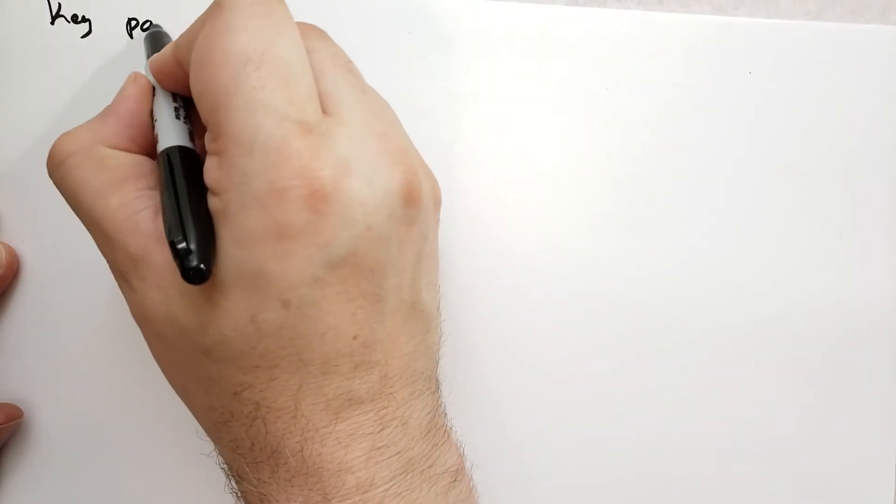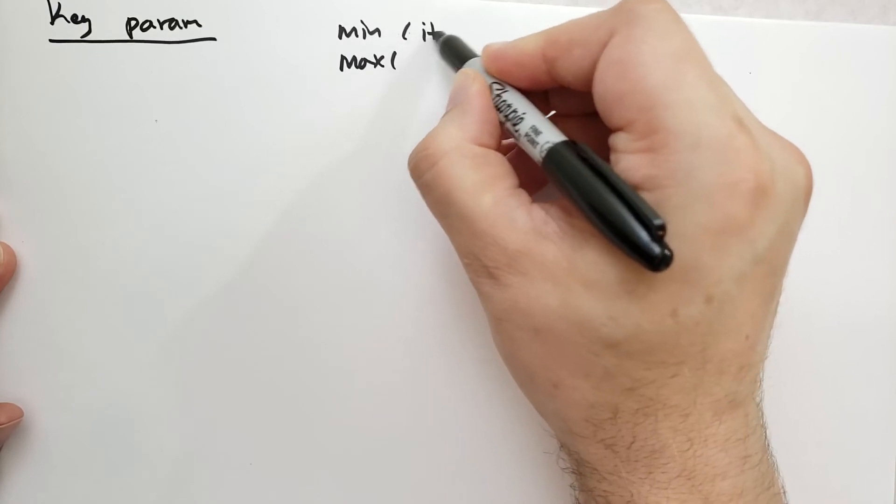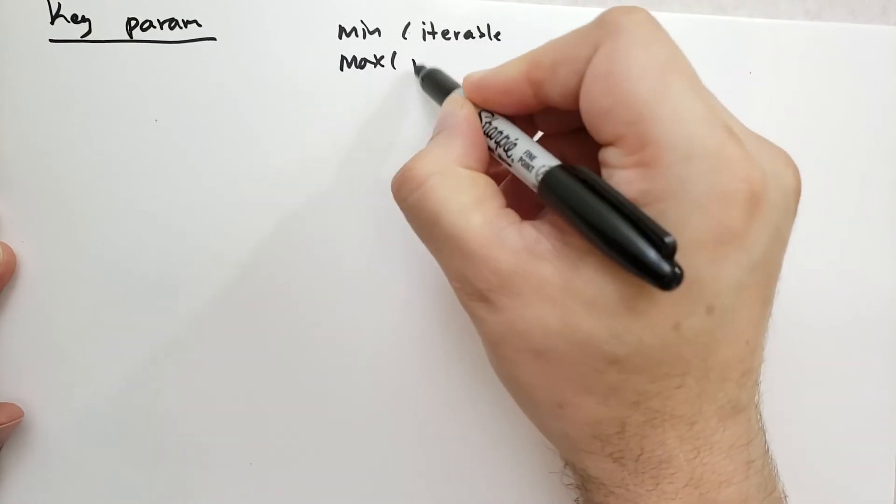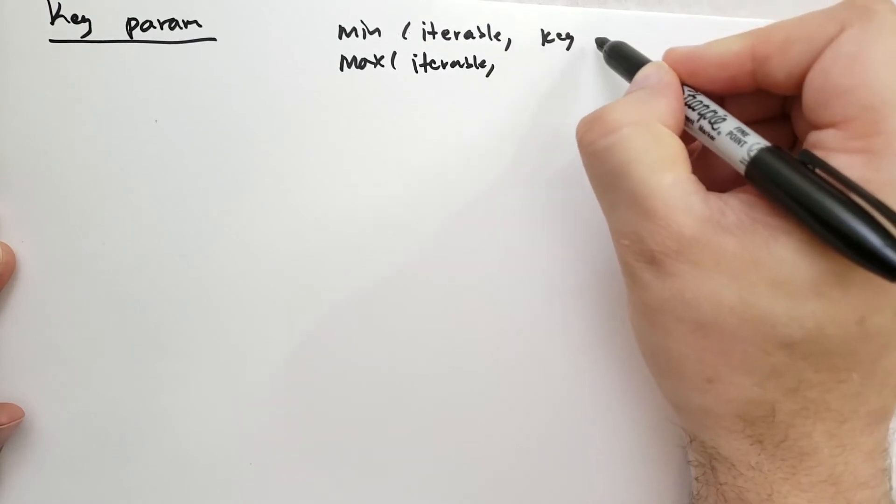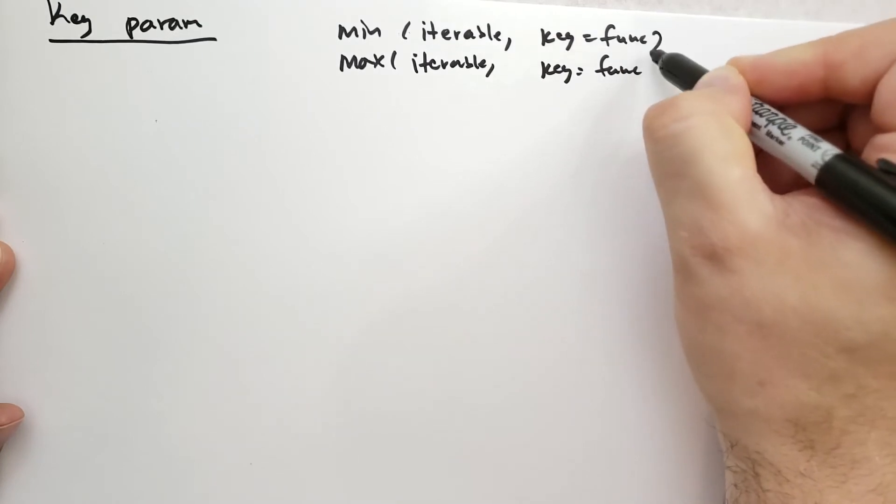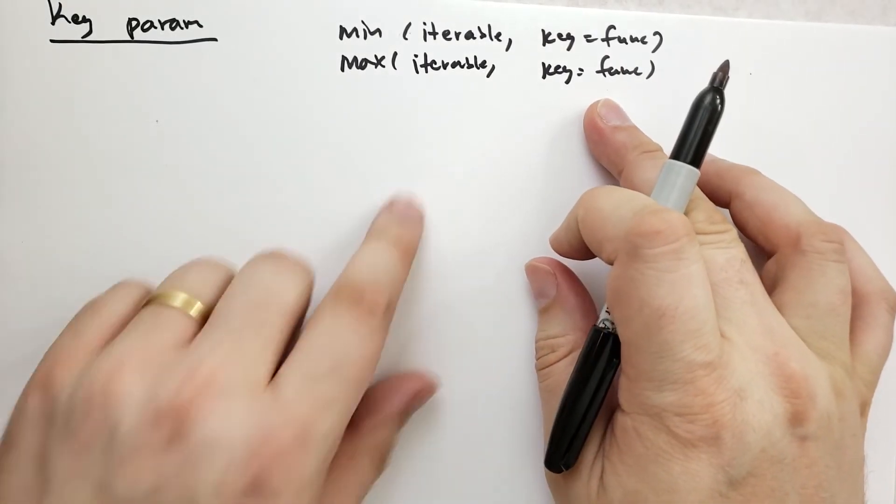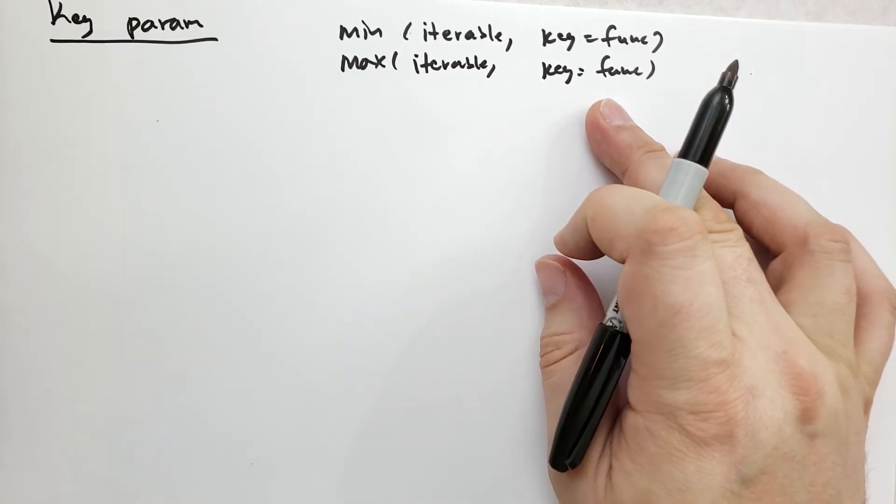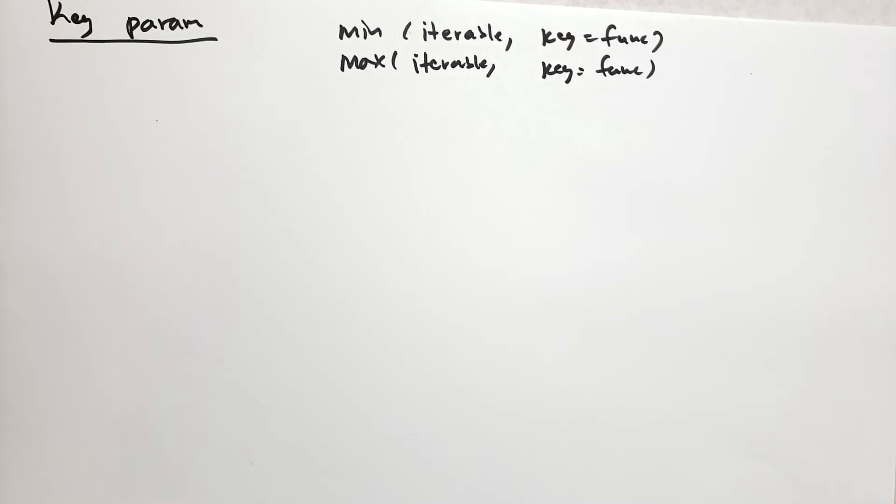The key parameter actually shows up in a couple other places in Python. We see it in the min and the max functions. These take an iterable and an optional key value, and that key has to be a function. If that key is specified, then it will apply that to each item in the iterable and then find the minimum or maximum of the result of that function and return the original value.